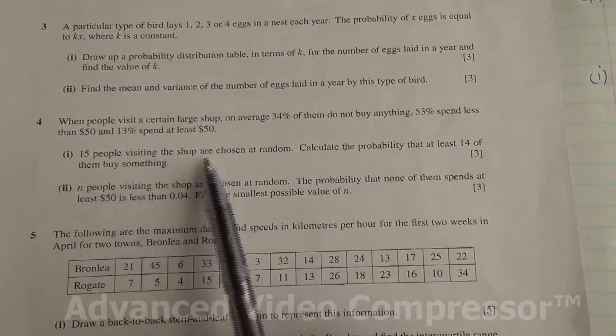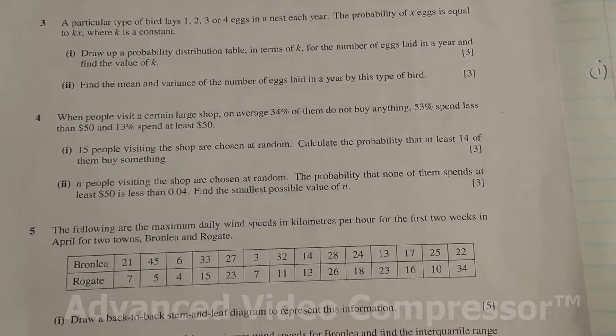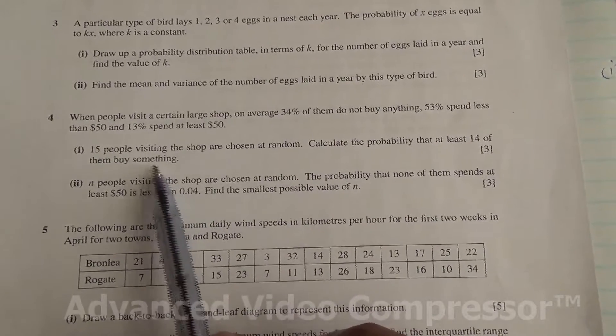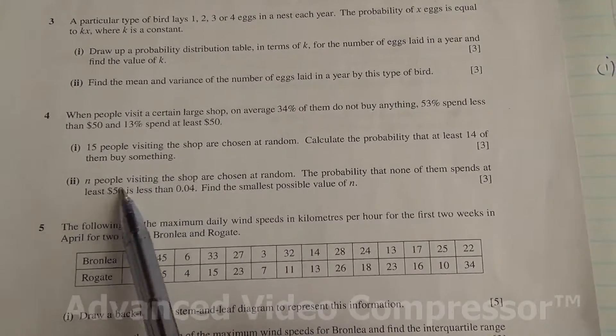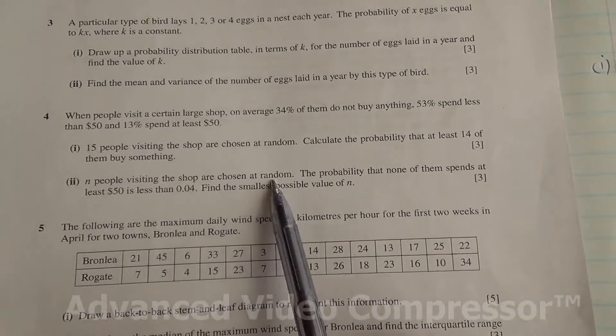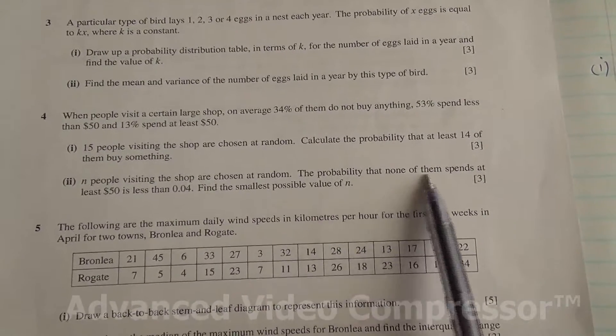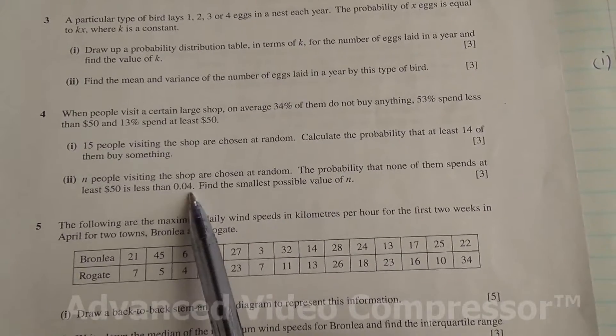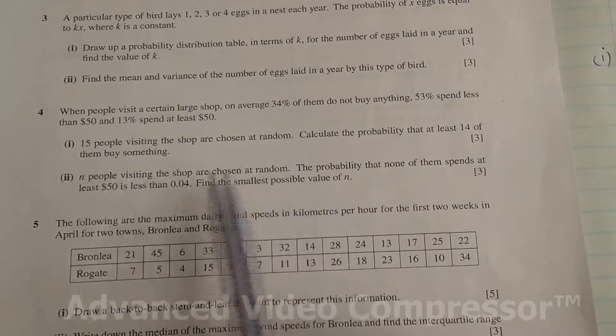Now 15 people visiting the shop are chosen at random. Calculate the probability that at least 14 of them buy something. And also n people visiting the shop are chosen at random, the probability that none of them spends at least $50 is less than 0.04. Find the smallest possible value of n.